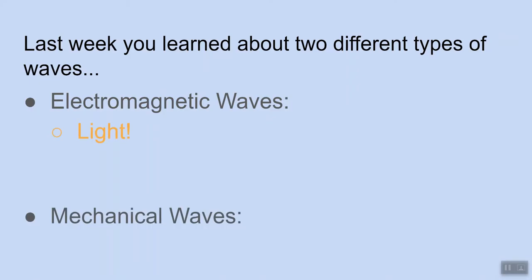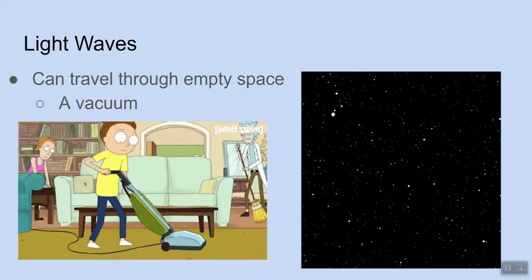Mechanical waves, Mr. G gave you a few different examples, but the main example that we're going to be talking about today are sound waves. Now, because light waves are electromagnetic waves while sound waves are mechanical waves, they behave differently in different media and actually travel at different speeds. So we are going to talk about that today.